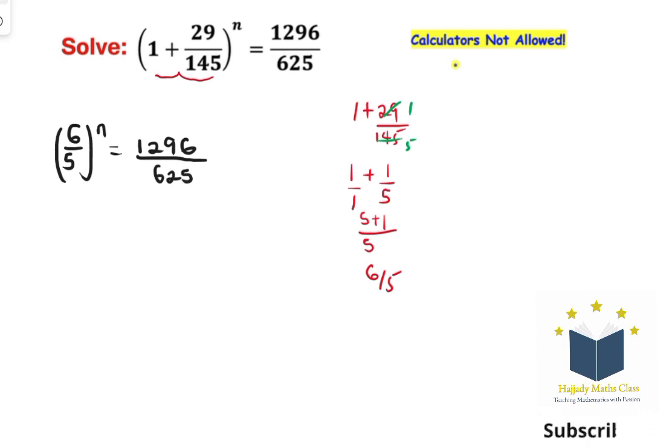So now going to the right hand side, I have that 1296 is the same thing as saying 6 to the power of 4. Also, 625 is the same as saying 5 to the power of 4.